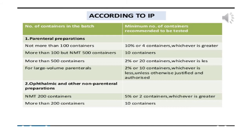IP has suggested methods by which you can select how many containers are to be subjected to a particular sterility test. For parenteral preparations: if your batch size is not more than 100 containers, you select 10% or 4 containers, whichever is greater. If your batch size is more than 100 but not more than 500 containers, you have to select 10 containers out of that batch size to perform sterility testing.